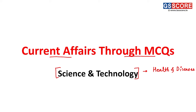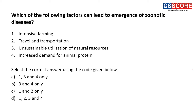Let us start with the questions. The first question is: which of the following factors can lead to the emergence of zoonotic diseases? First of all, what are zoonotic diseases? Zoonotic diseases are diseases that are passed to human beings from animal sources.